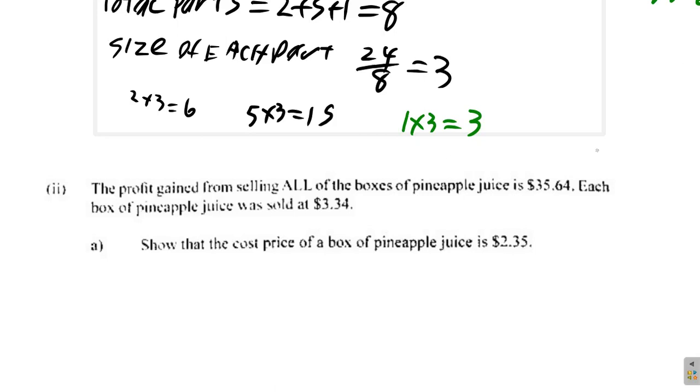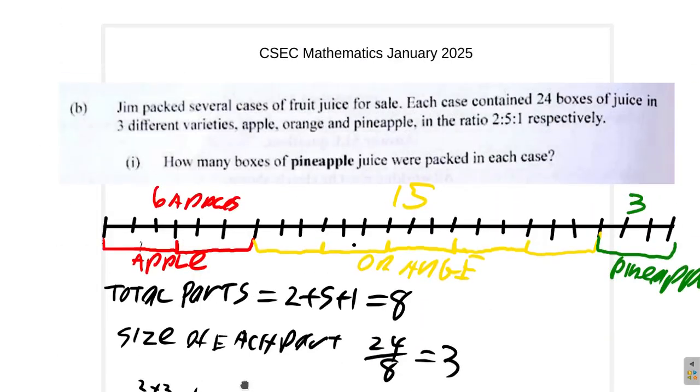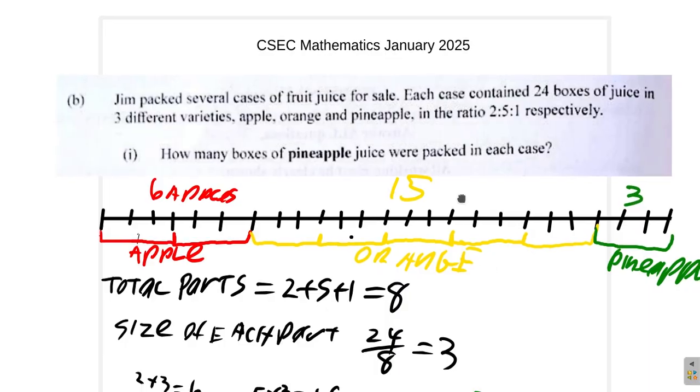So here, you have several cases being sold, and each case contains three boxes of pineapple juice. Now look at this. If you sell three boxes of pineapple juice, you wouldn't make anywhere near $35.64. So more than one case were sold, because the question says several cases of fruit juice were there for sale.